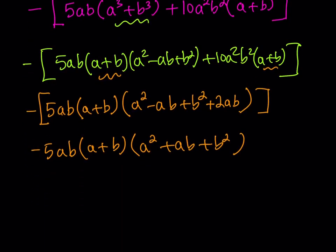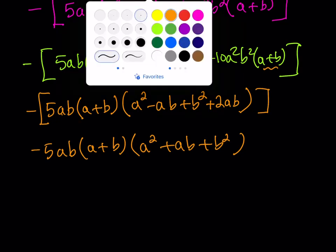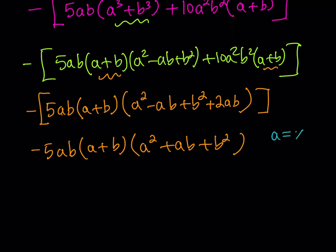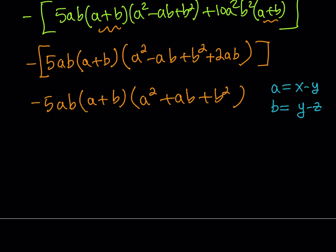What did we call a, and what did we call b? If you remember, our initial substitution was a equals x minus y, and b equals y minus z. So I'd like to go ahead and back substitute everything and get my final answer.